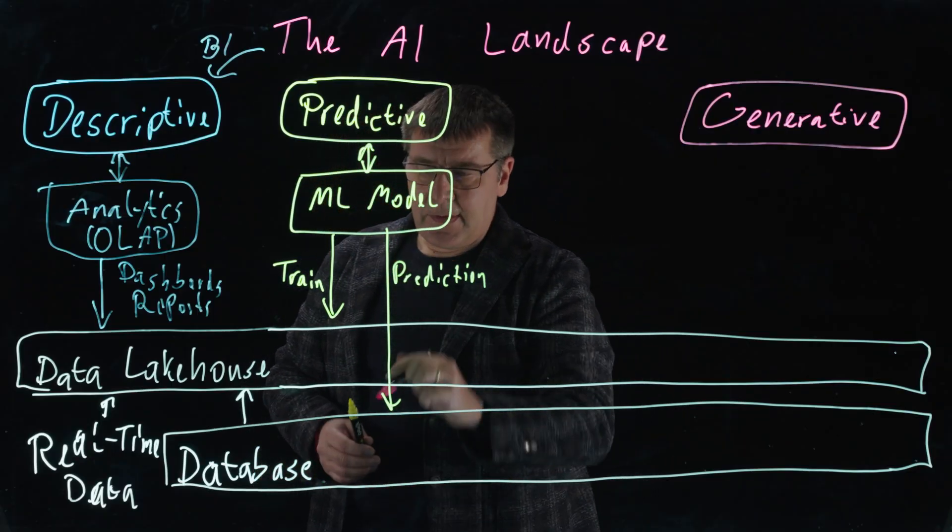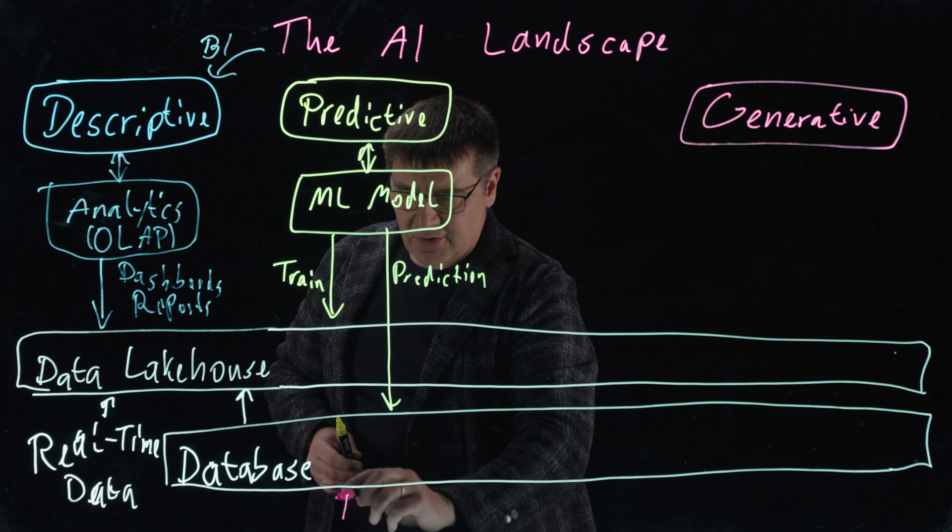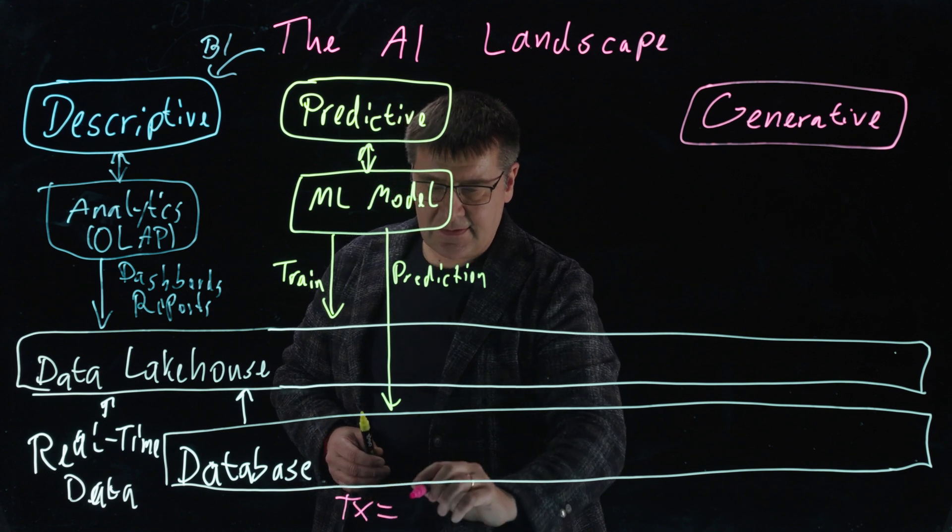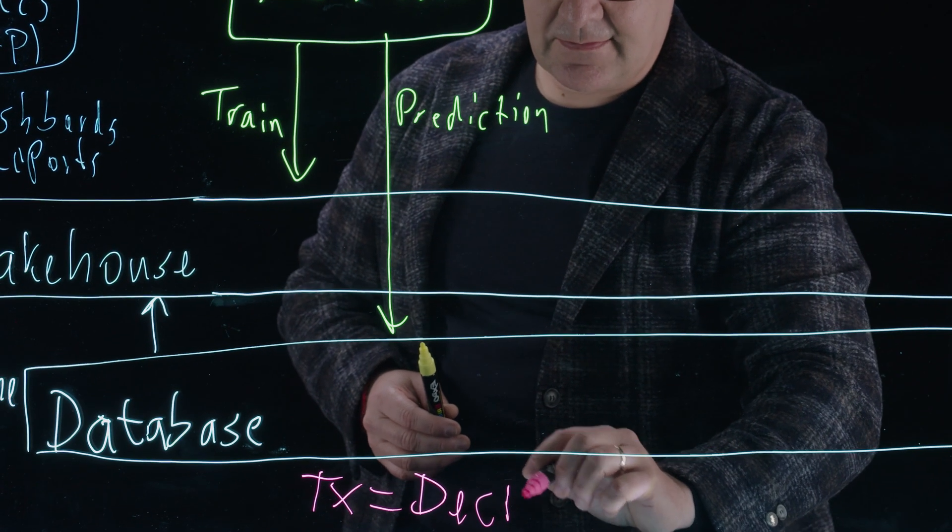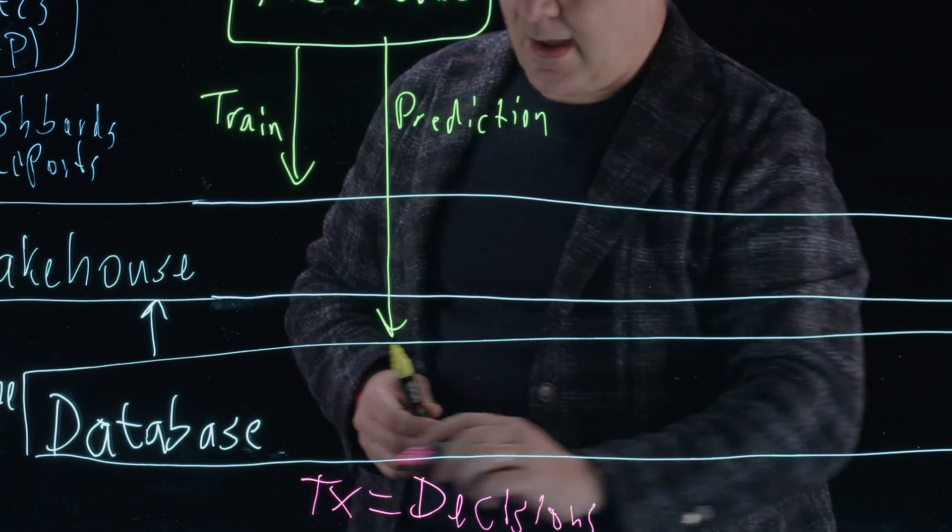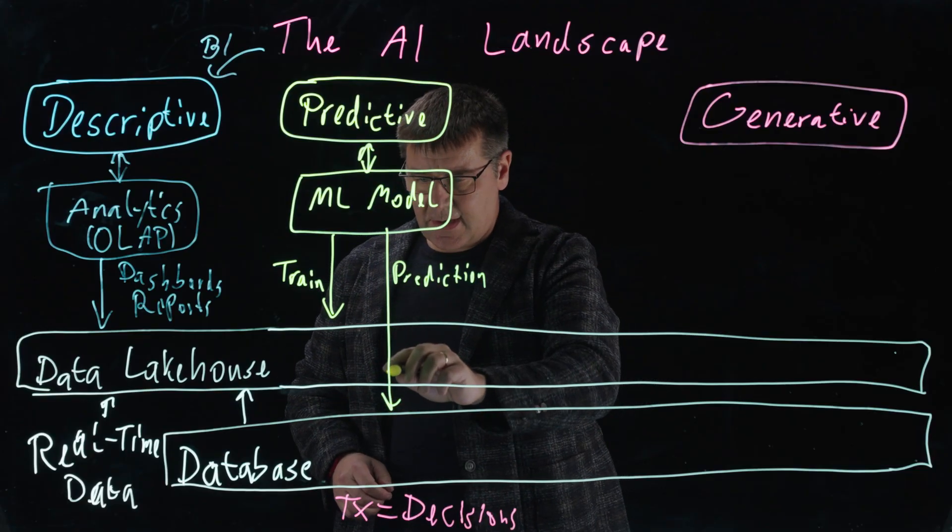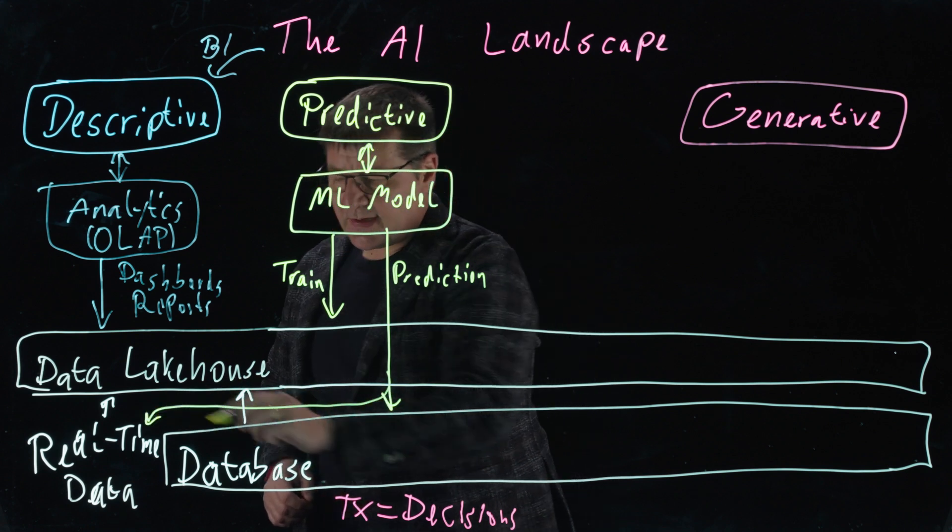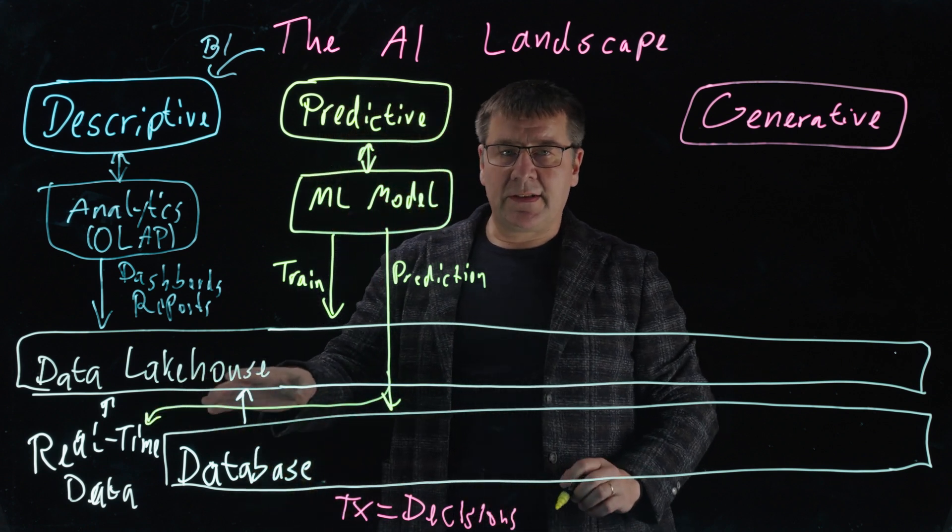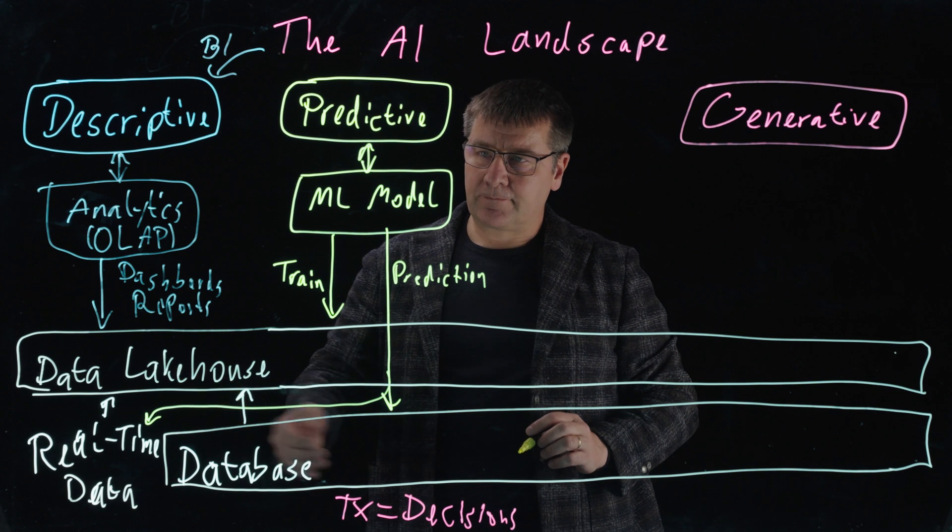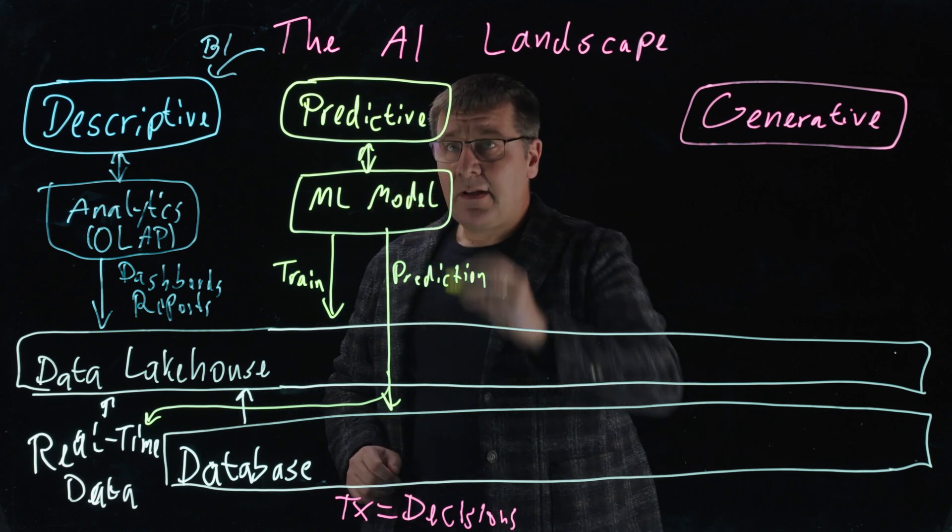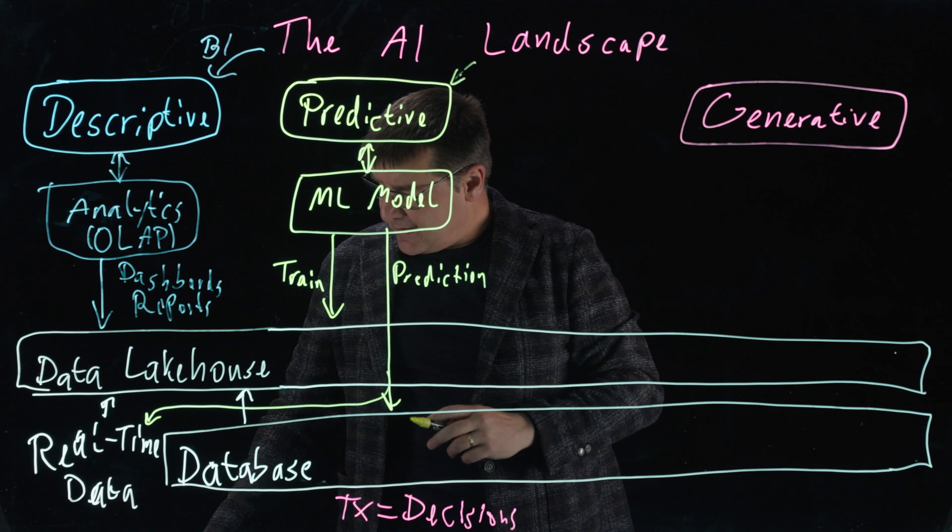So the key thing is here, you make predictions when transactions are happening, because transactions means you're doing decisions. And this can also be something that's outside of a database. Looking at real-time data, you could also say, I need to make these decisions in real time when a certain message is arriving. So that's how predictive analytics is related here.